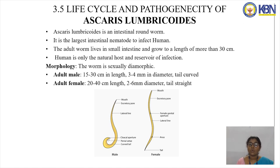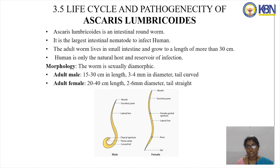The worm is sexually dimorphic. The adult male measures about 15 to 30 centimeters in length, 3 to 4 mm in diameter, and has a curved tail. The adult female is 22 centimeters in length, 2 to 6 mm in diameter, and has a straight tail. We can differentiate male and female by observing the tail region — the male tail is curved and the female tail is straight.